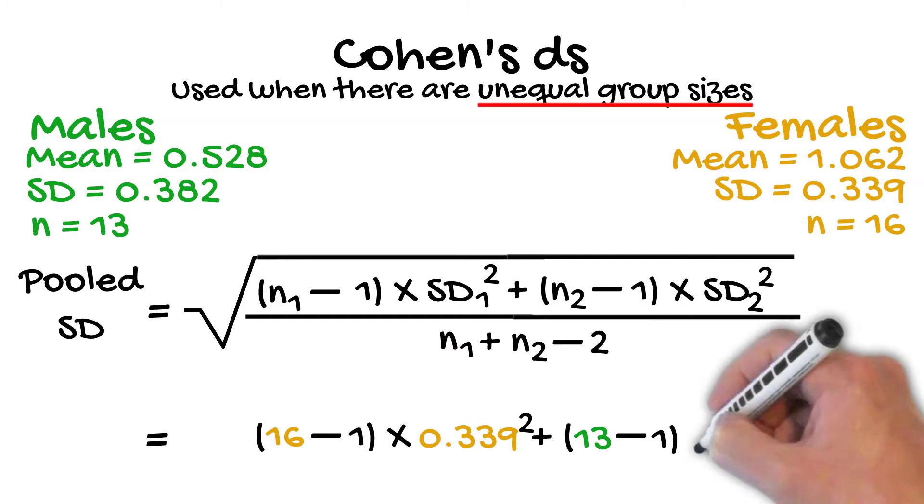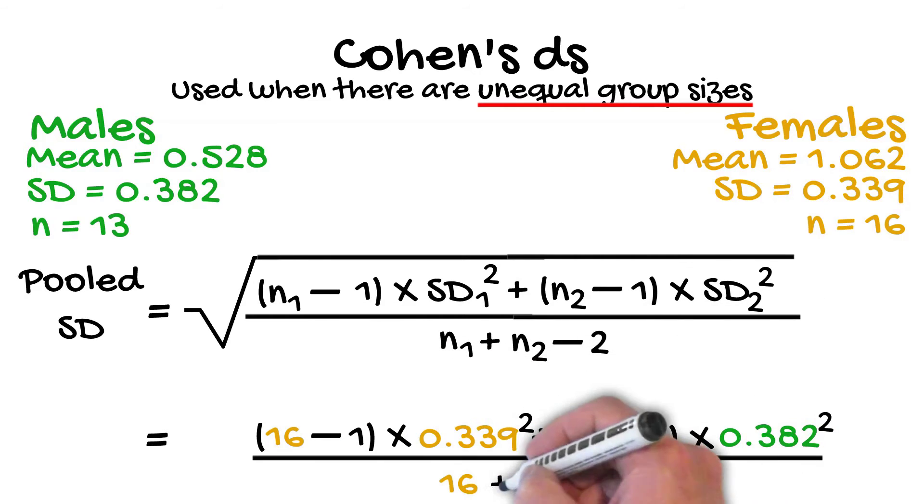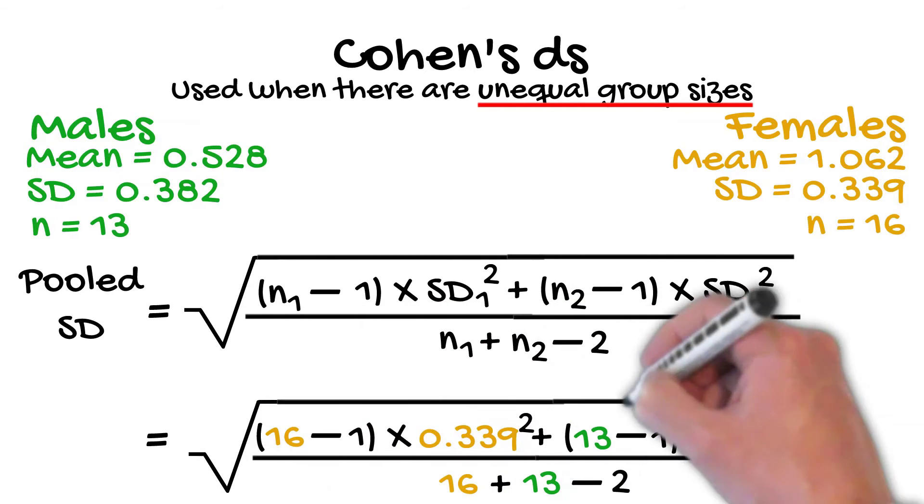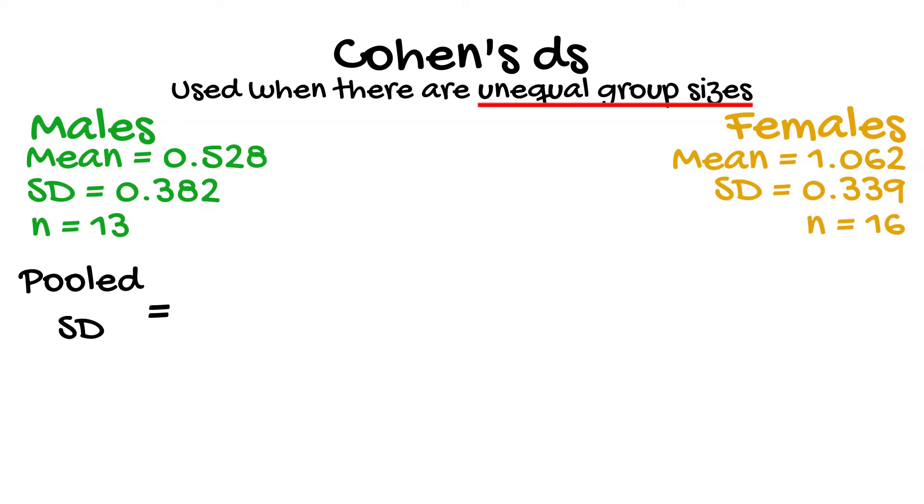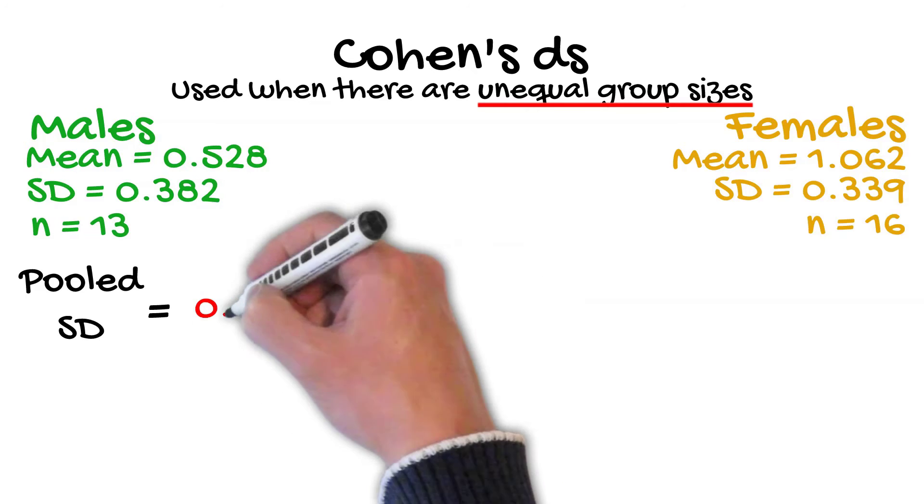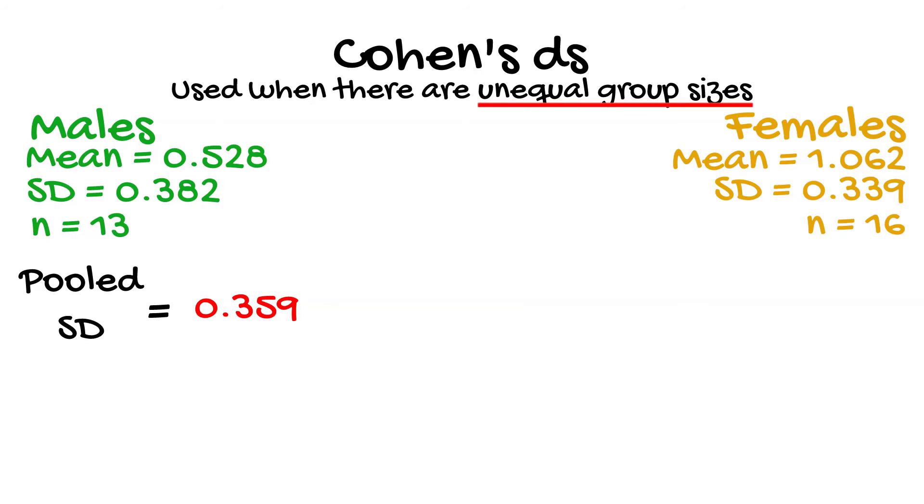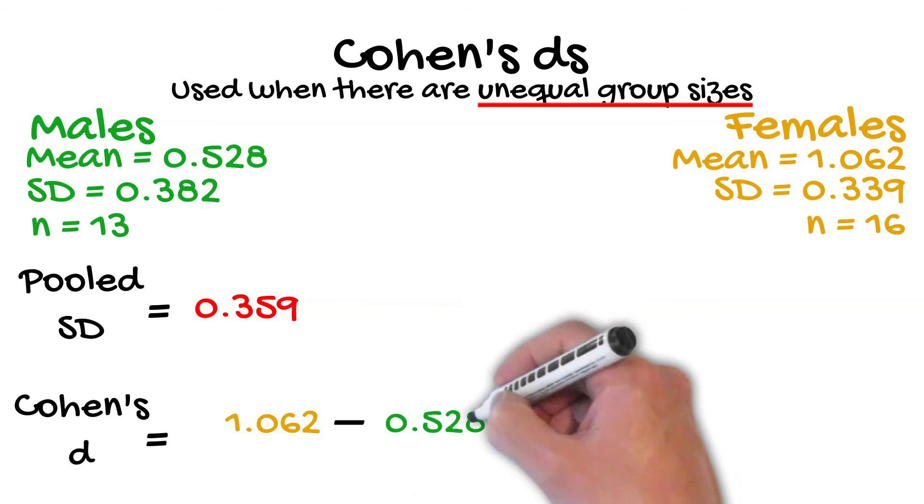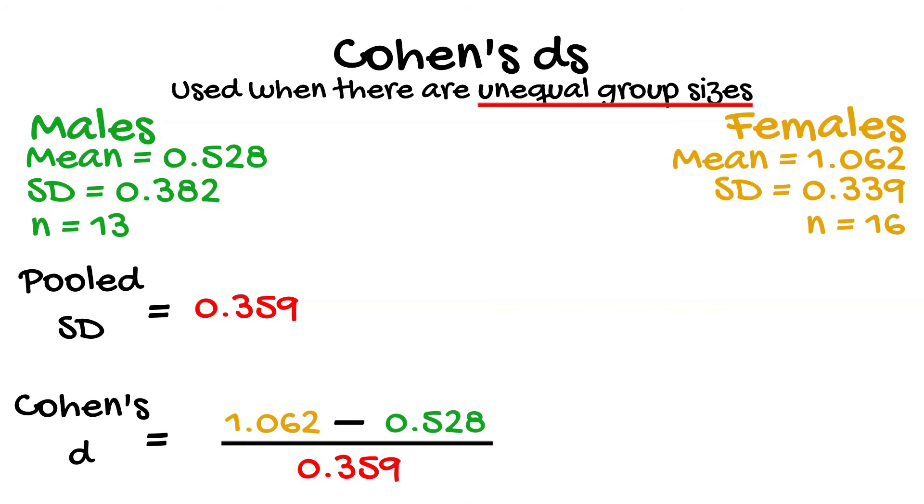So, by entering the data we now have, we can calculate the pooled standard deviation as follows. This then gives a pooled standard deviation of 0.359. Again, putting this back into the Cohen's D formula now gives a value of 1.489.